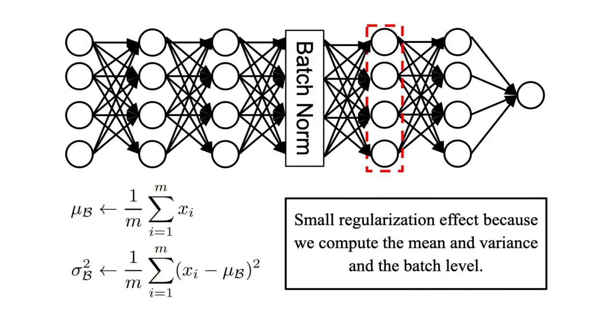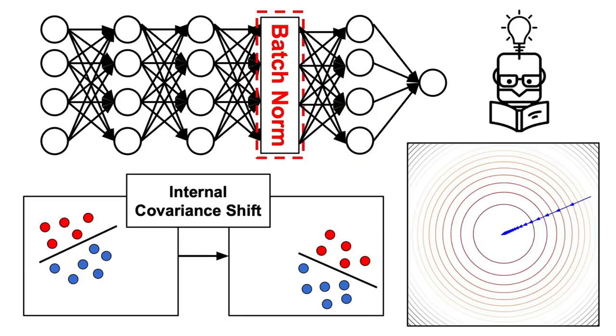Finally, BatchNorm also induces a small regularization effect due to the noise we get when we try to estimate the mean and variance using the information available within a certain batch that may come in handy for neural networks, which are well known to have a high variance. And those are basically three of the most well known arguments of why batch normalization works so well when training deep neural networks.